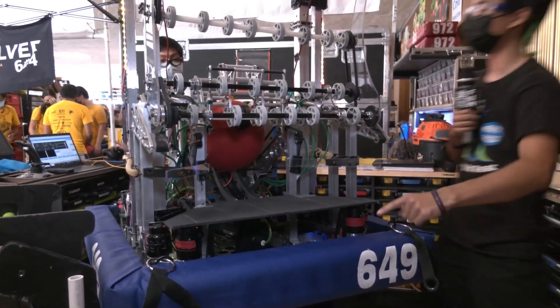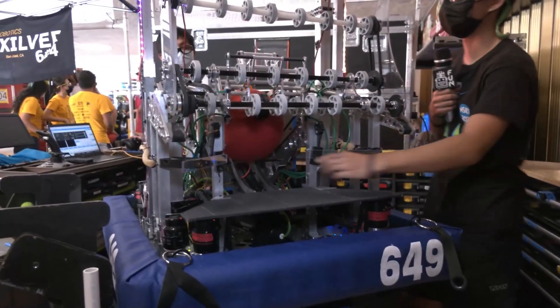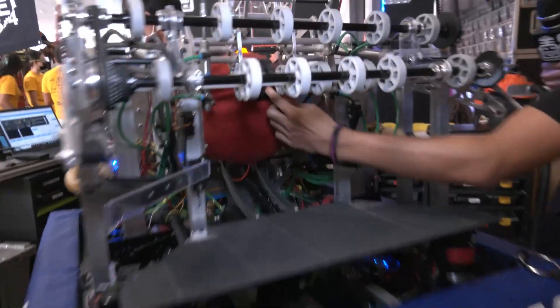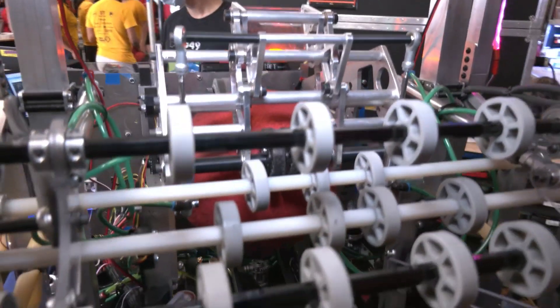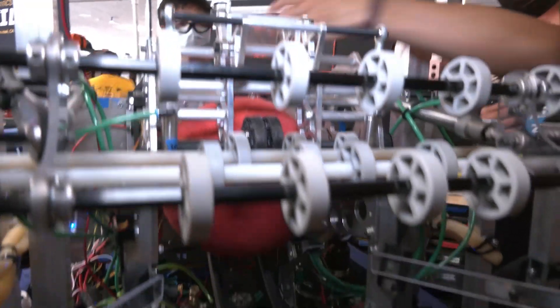This is the ball path that moves up here into our shooter. The shooter has a second wheel right here, which we actually print out of TPU. This just spins to feed the ball into our shooter, and that's it.